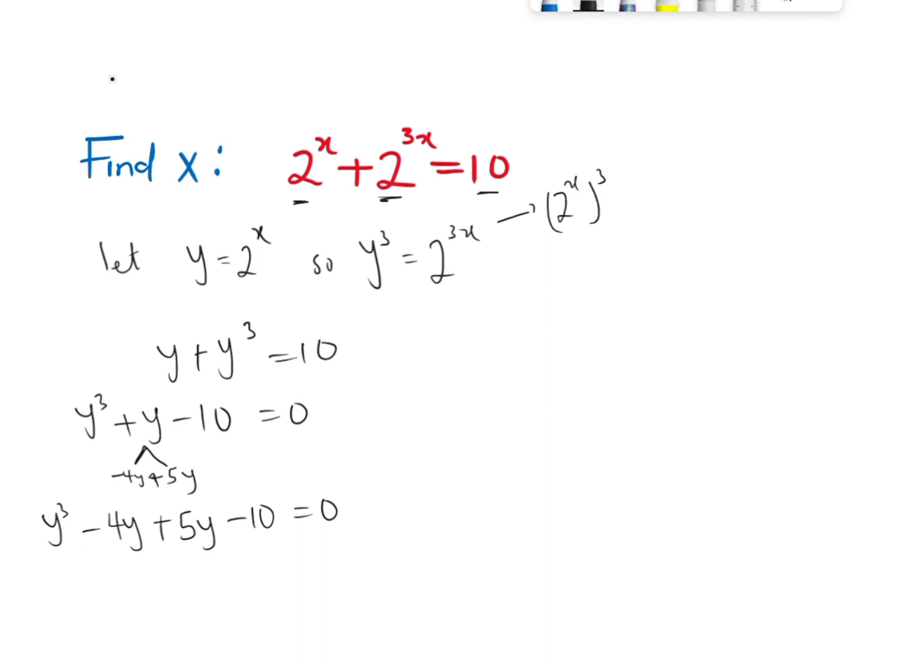So here, I have y raised to the power 3 minus 4y plus 5y minus 10 equals 0. Now, let's factorize out. I'm going to factor out y, so I have y squared minus 4. And from here, let me factor out 5, so I have y minus 2 equals 0.